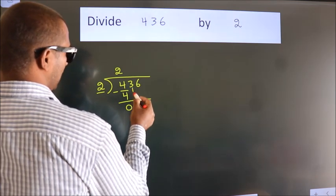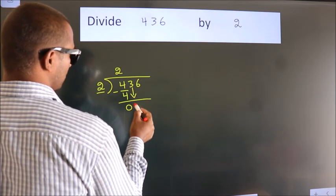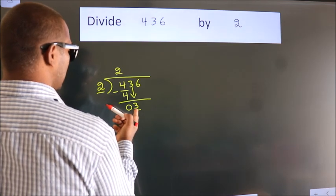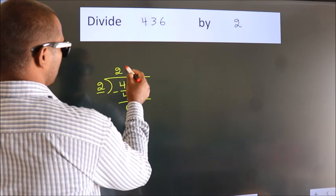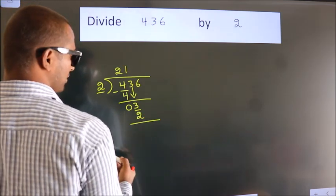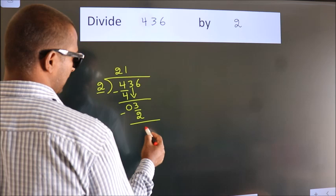After this, bring down the beside number. So 3 down, so 3. A number close to 3 in 2 table is 2 1s, 2. Now we subtract, we get 1.